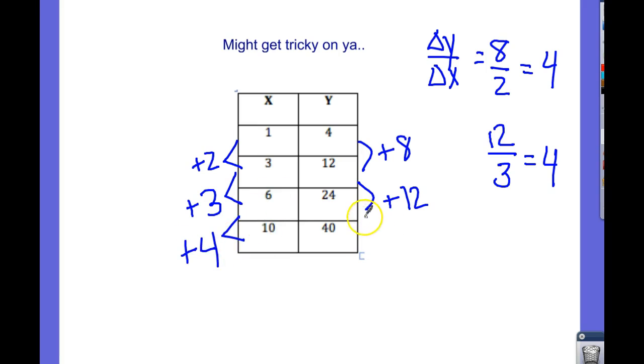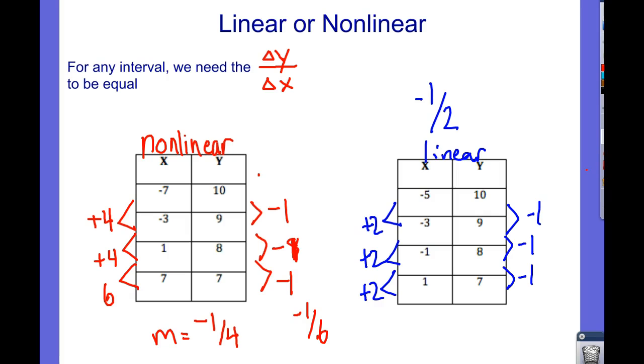Since I went 3 here, I had to go 12 here, because I have to go 4 for every 1. So, just because it's a different jump doesn't necessarily mean it's a different rate of change. Here, it's plus 4. Here, it's plus 16. And that would be 16 over 4. That is a rate of change of 4 as well. So, be careful, because even if there are different jumps, that doesn't mean it's nonlinear. The only time it's nonlinear is if you have a different rate of change over any interval.